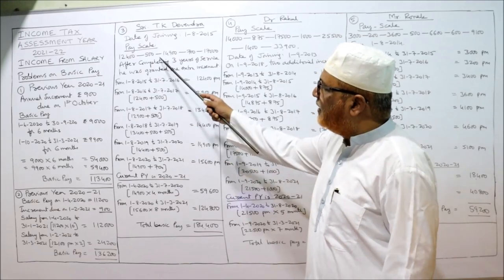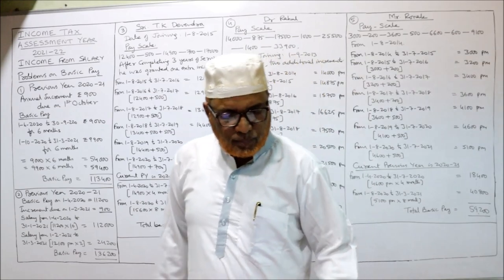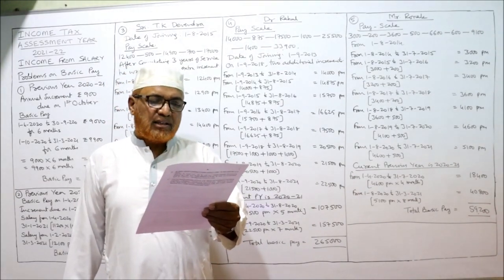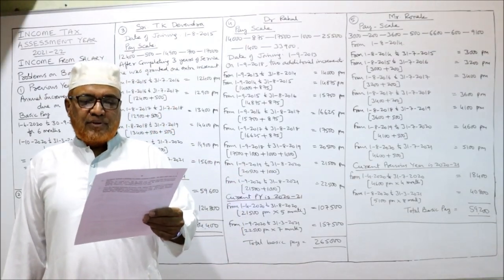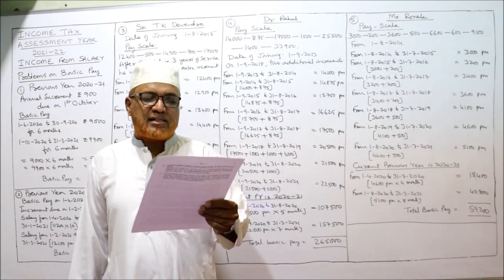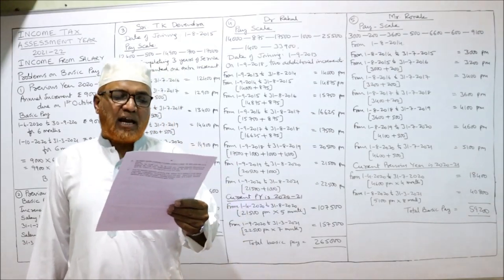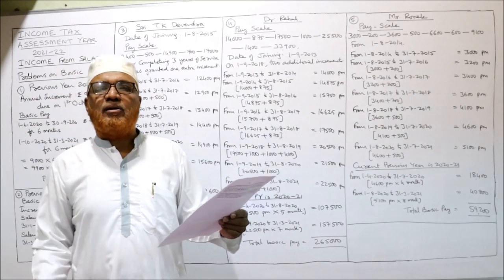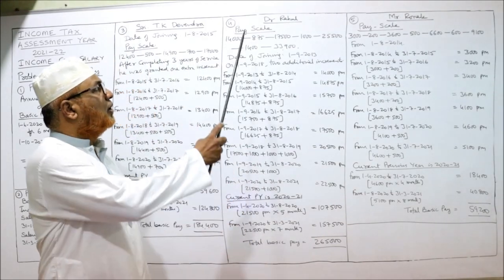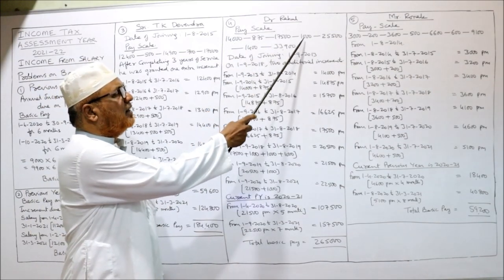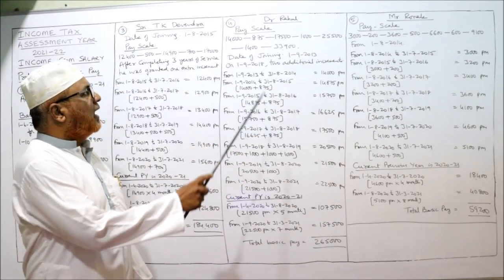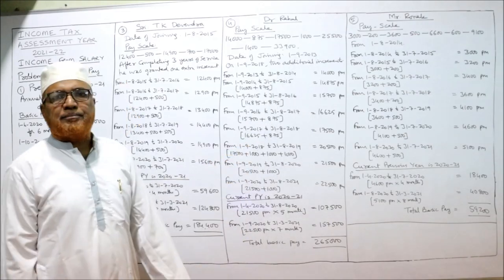In this way we calculate the basic pay for the current previous year when graded form is given. Now the fourth problem: Dr. Rahul is working as a Junior Scientific Officer in the pay scale of 14,000 – 875 – 17,500 – 1,000 – 21,500 since 1st September 2013. On 1st September 2018 he was promoted as a Senior Scientific Officer by giving two additional increments in addition to the normal increment.